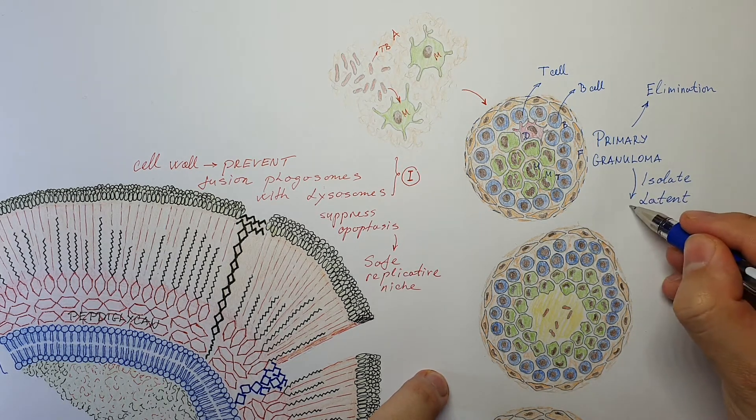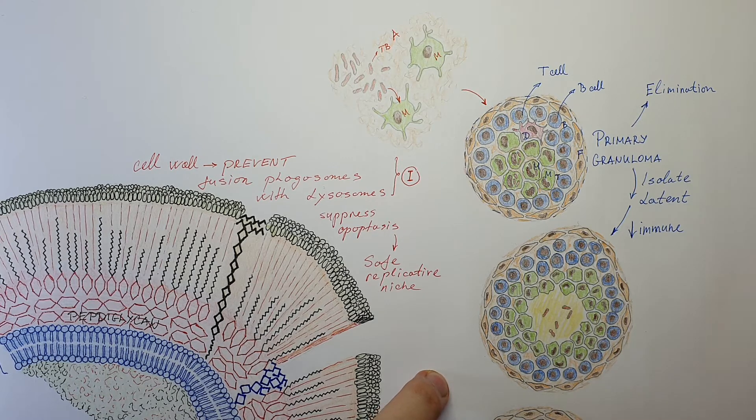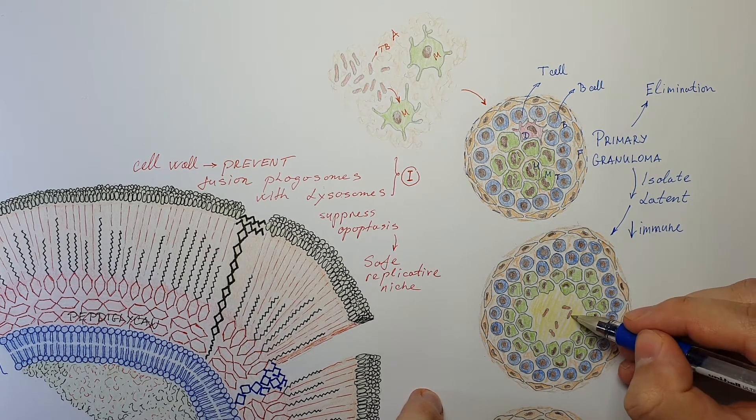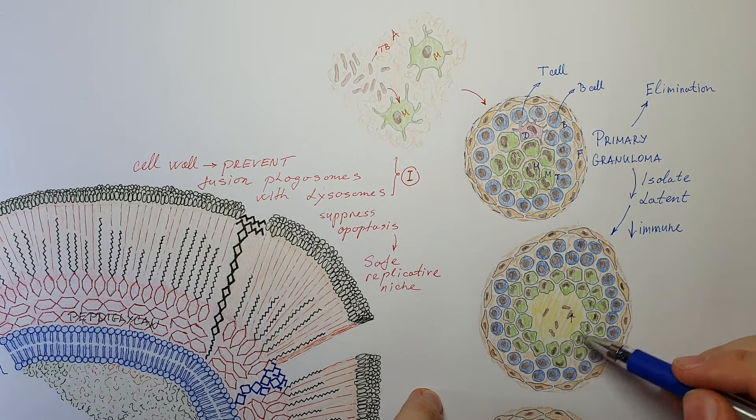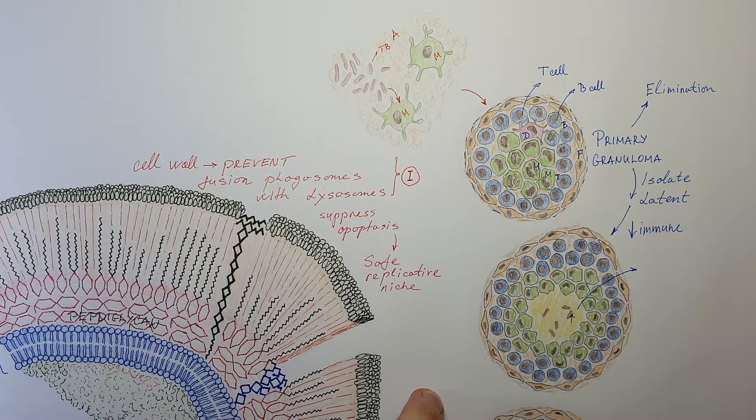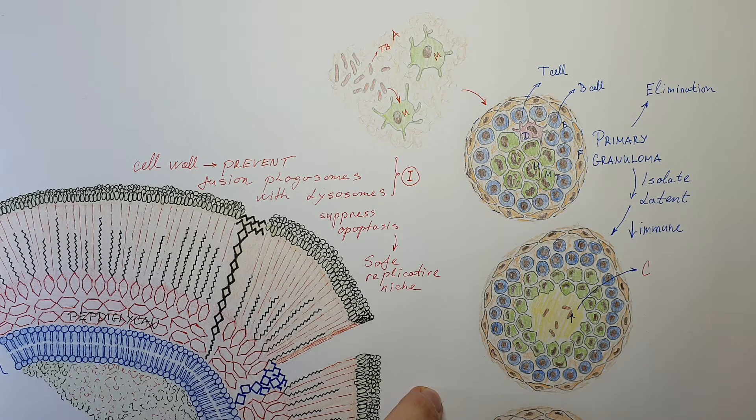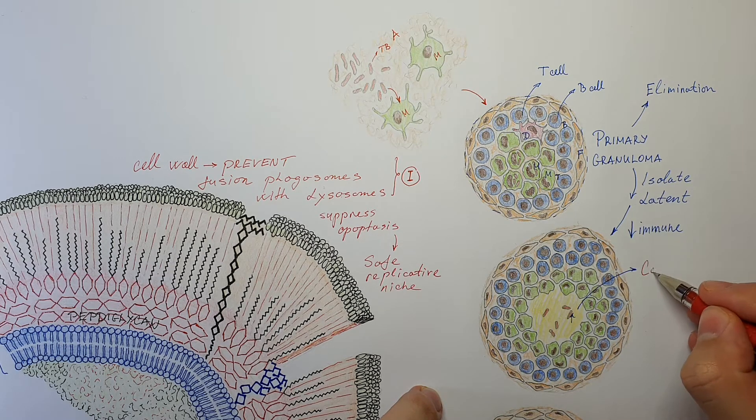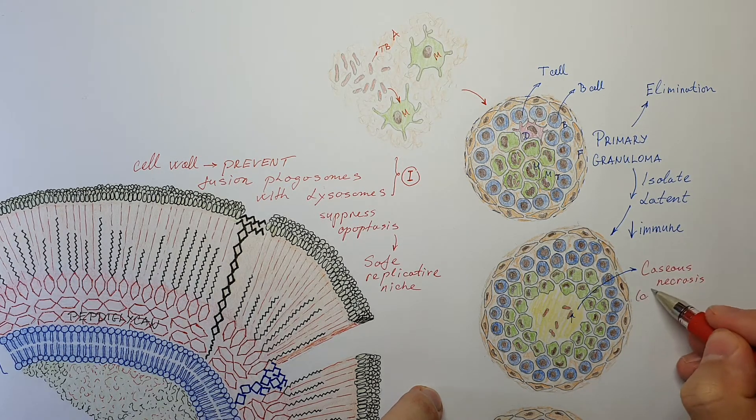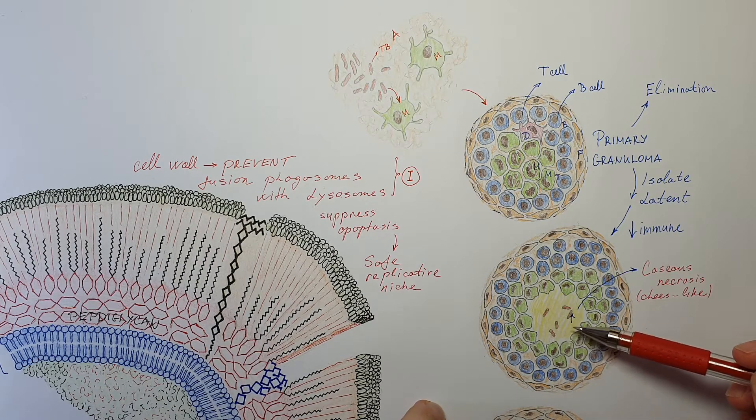If the immune system capacity goes down, there is a possibility of reactivation. Then the bacteria start to replicate. Necrosis starts to form in these granulomas. So this necrosis is typical. It is actually called caseous necrosis because it resembles cheese. It's cheesy-like. It's whitish. Or cheese-like. So basically, the bacteria gets activated. Macrophages start dying.